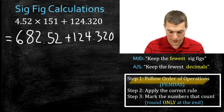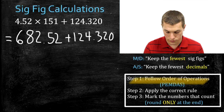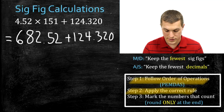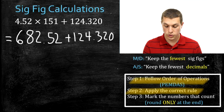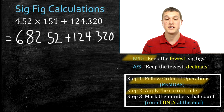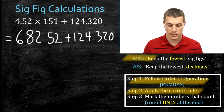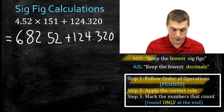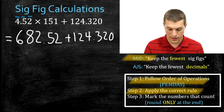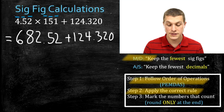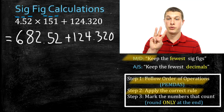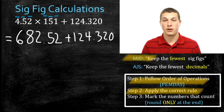Step two says apply the correct rule. In this case we did multiplication, so we want to follow the multiplication-division rule, which says keep the fewest sig figs. We count how many sig figs went into that calculation. Our two numbers are 4.52, which has three sig figs, and 151, which also has three sig figs. That means our answer should have three sig figs.